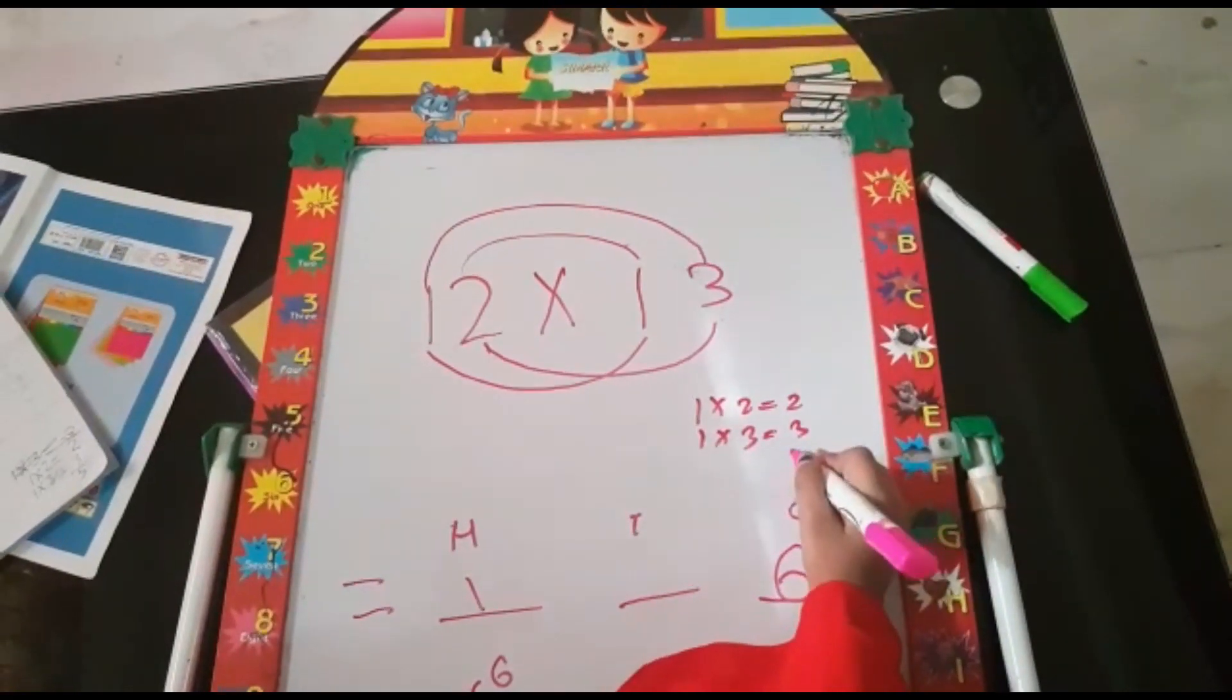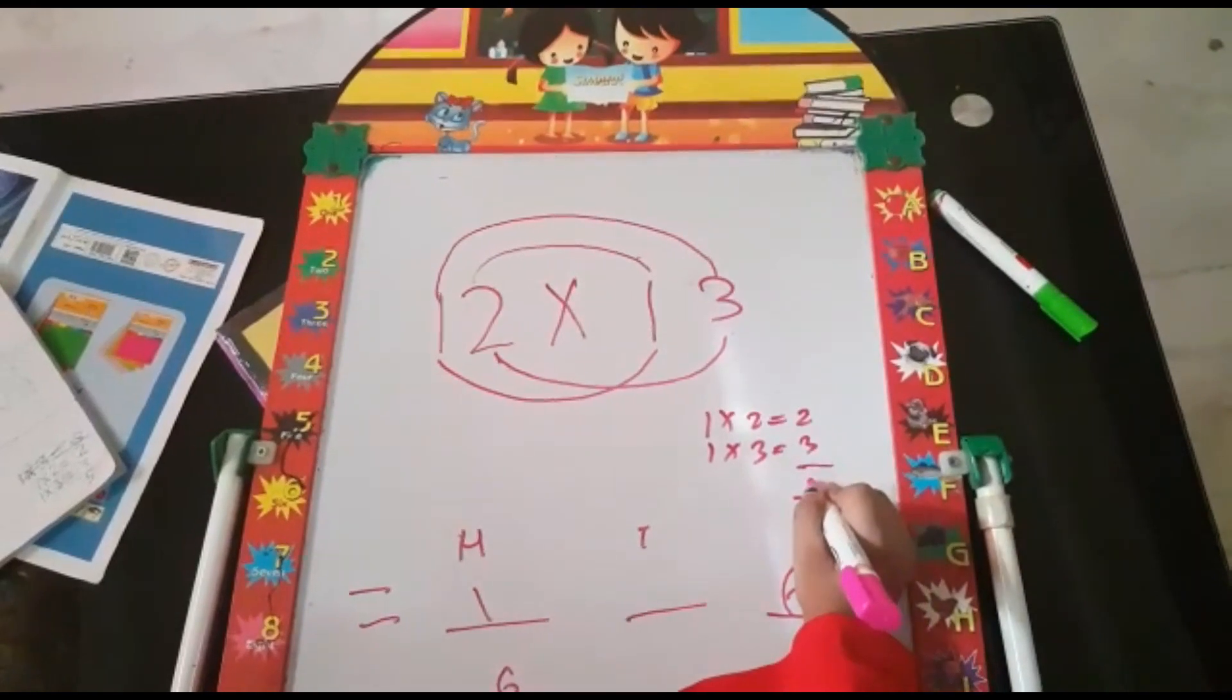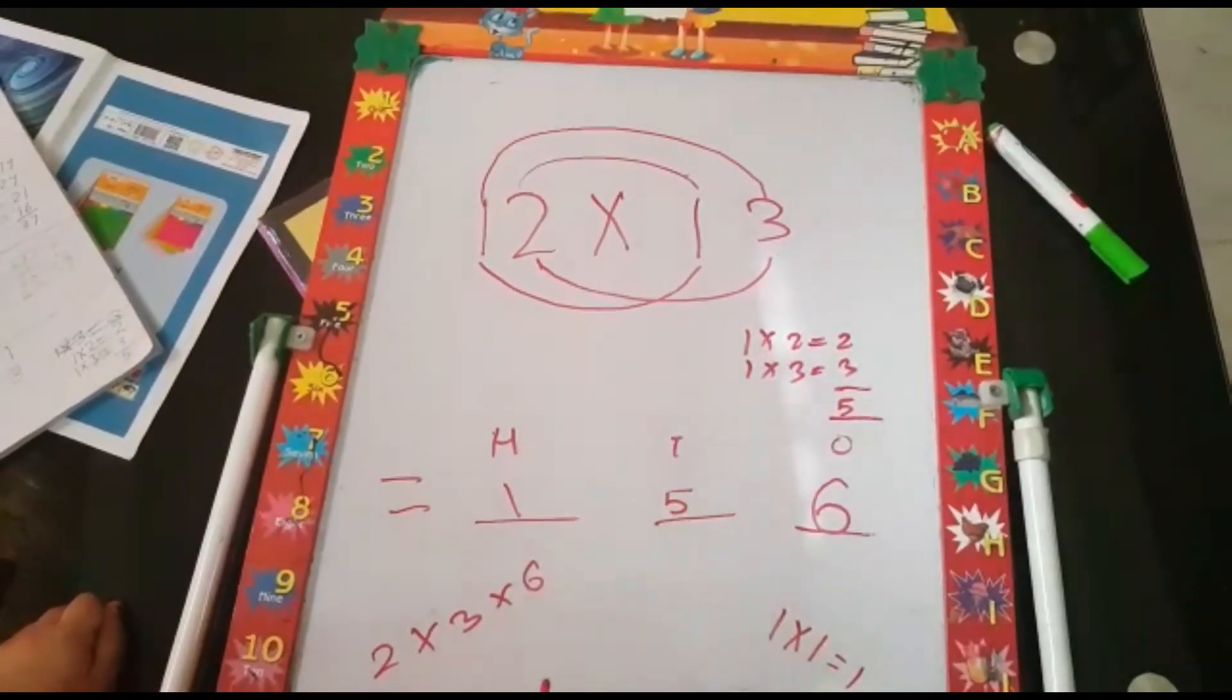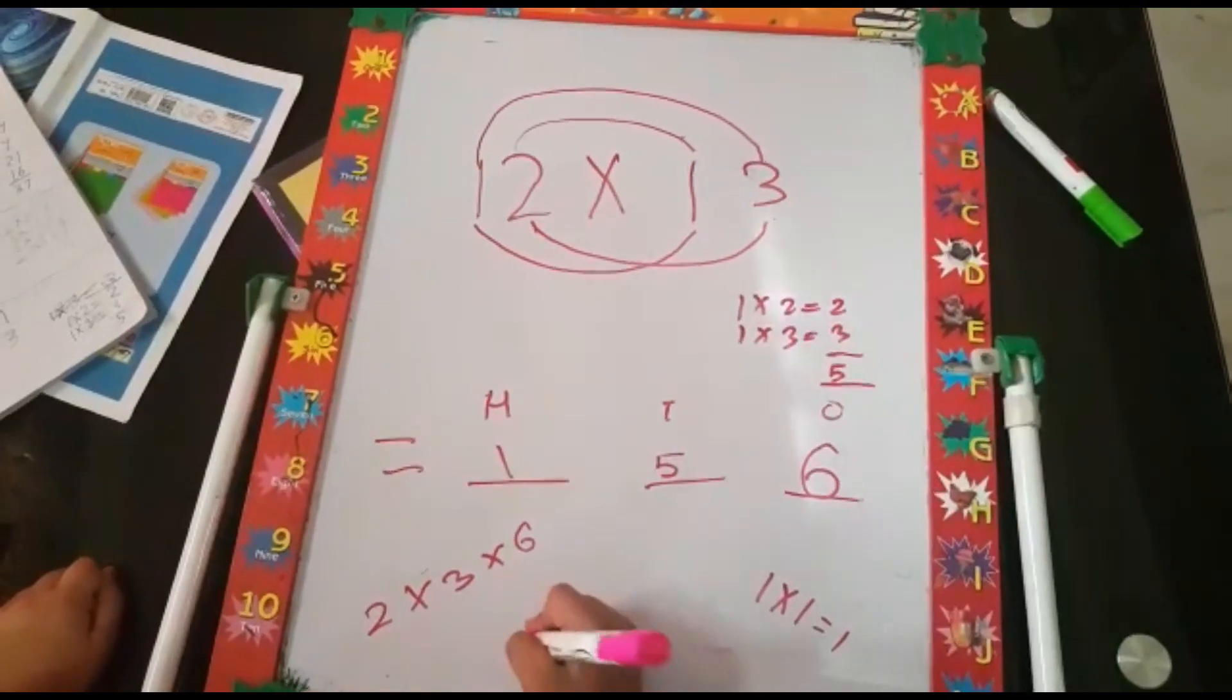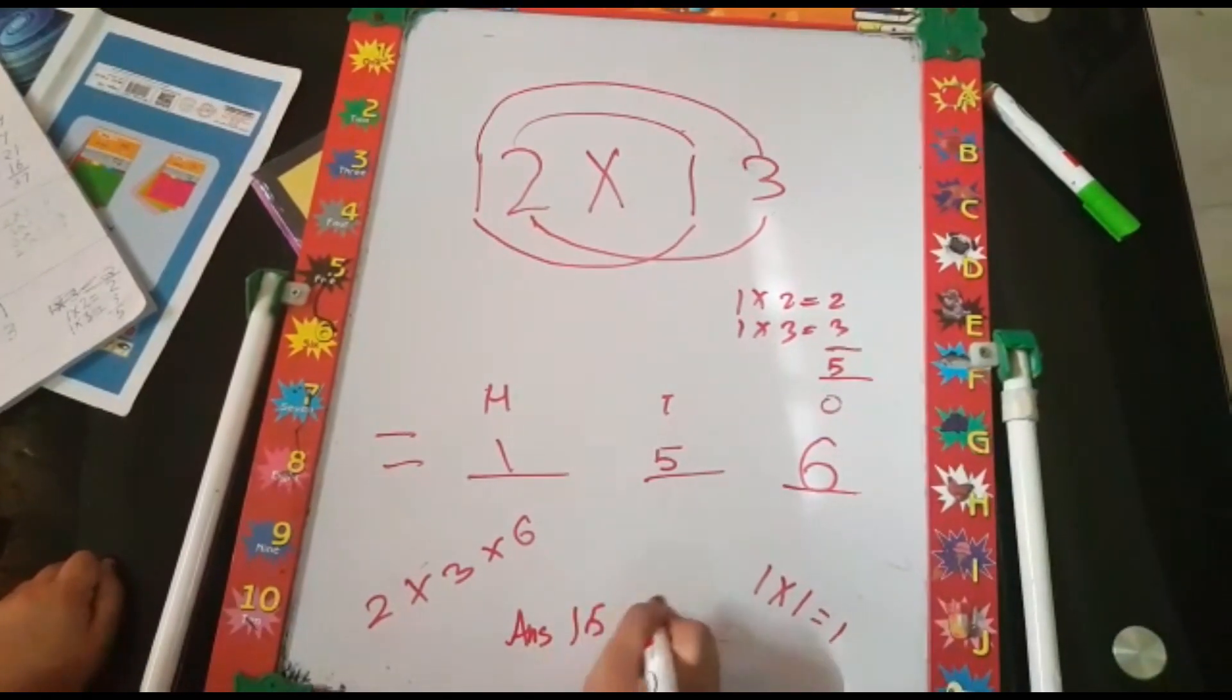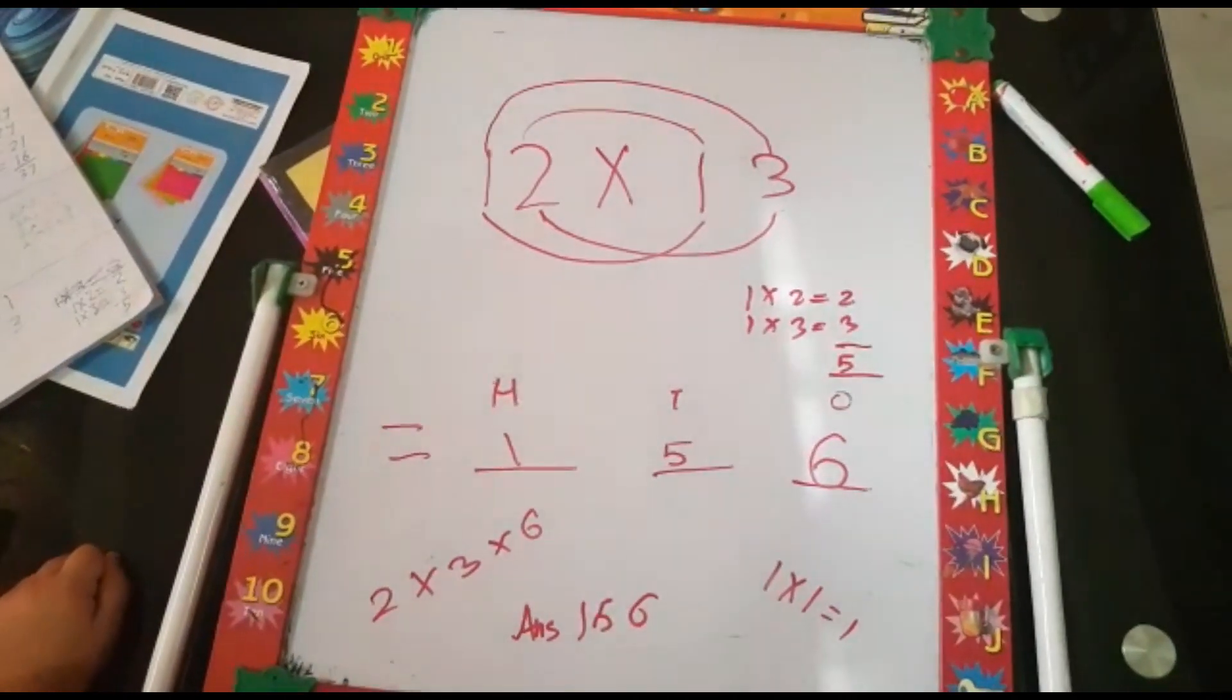You will add both these digits and we have 5 as an answer, which will add at 10s place in the answer. We have 156 as the answer.